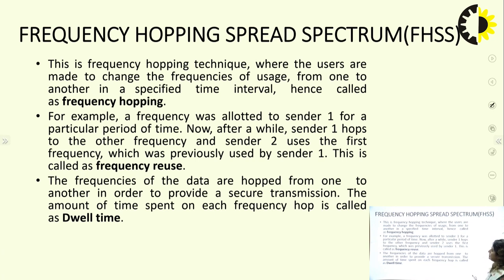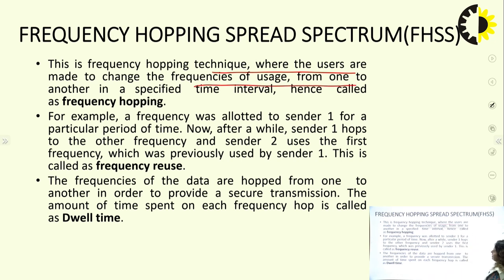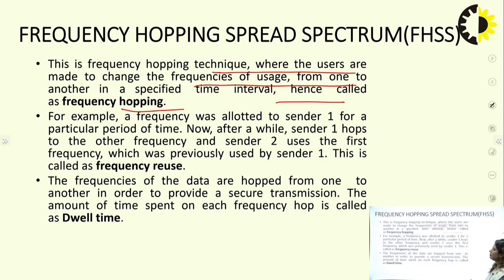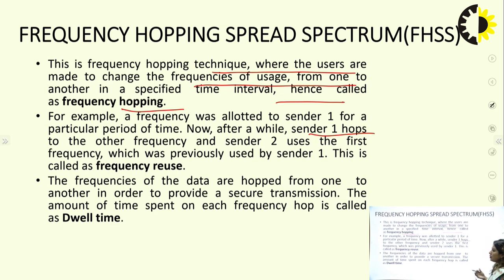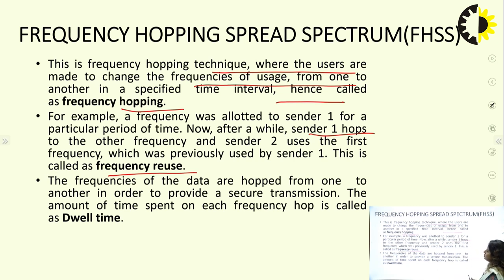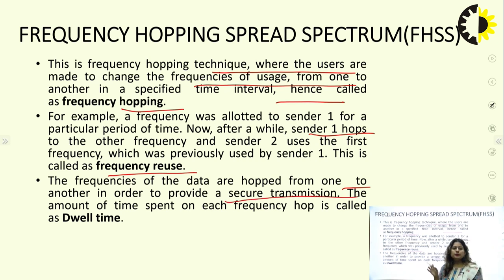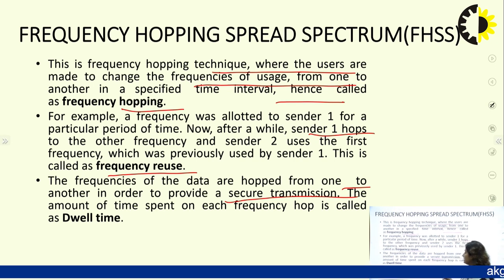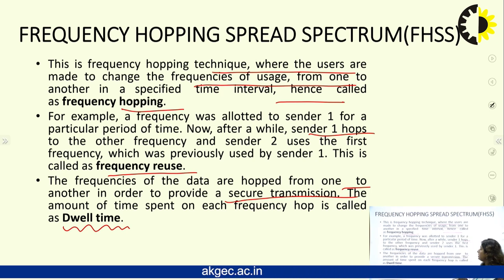Frequency Hopping Spread Spectrum (FHSS) is a technique where users change their transmission frequency from one to another at specified time intervals — hence called frequency hopping. For example, if a frequency is allocated to sender 1 for a particular period, after a while sender 1 hops to another frequency and sender 2 uses the frequency previously used by sender 1 — this is called frequency reuse. The amount of time spent on each frequency hop is called dwell time.